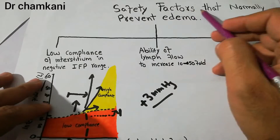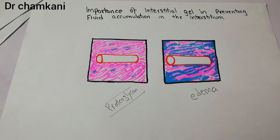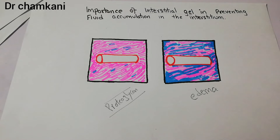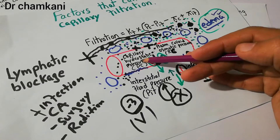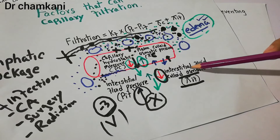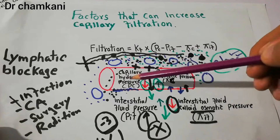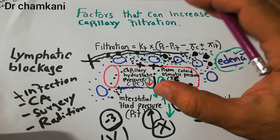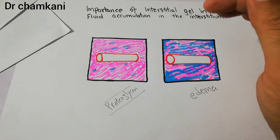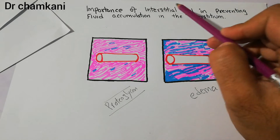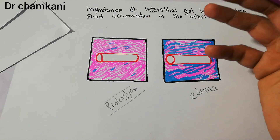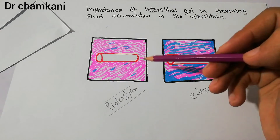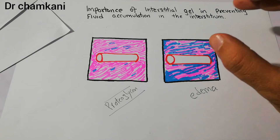This is the first safety factor that normally prevents edema. In a normal human being with normal interstitium, normal capillary hydrostatic pressure, normal interstitial fluid pressure, normal plasma colloid osmotic pressure, and normal interstitial fluid colloid osmotic pressure — and even with slight changes in these pressures — there will not be enough accumulation of free fluid in the interstitium. One of the most important factors is the interstitial gel, which keeps small amounts of fluid in pockets without allowing free movement, and this interstitial gel is one of the most important factors in preventing edema.